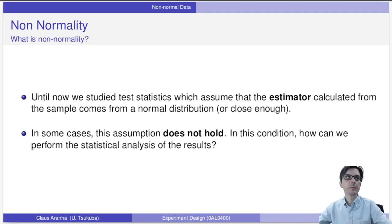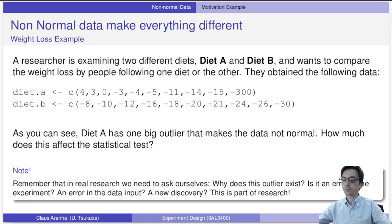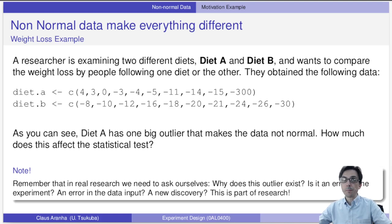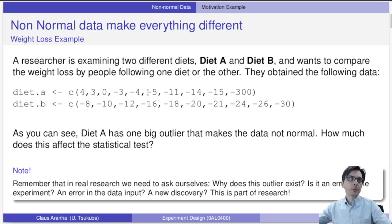Let's see an example. A researcher is examining two different diets, Diet A and Diet B, and wants to compare the weight loss by people following one diet or the other. They obtained the following data: there are 10 people that tried Diet A and 10 people that tried Diet B.